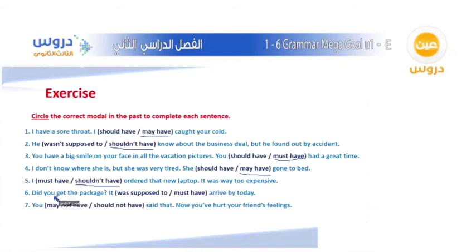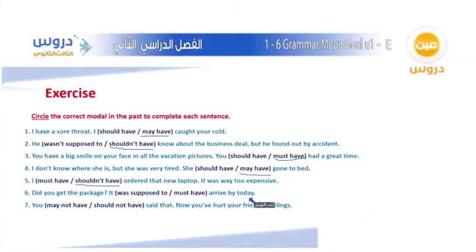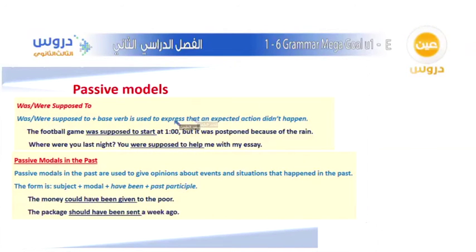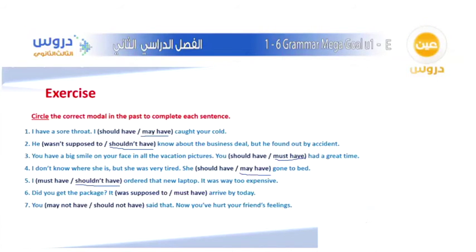Number six: Did you get the package? It was supposed to or must have arrived by today. The speaker expected an action that didn't happen — an expected action that didn't happen. We should use was supposed to. The answer is was supposed to.